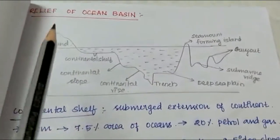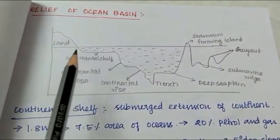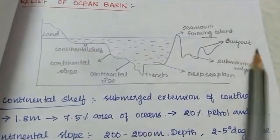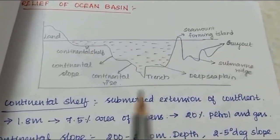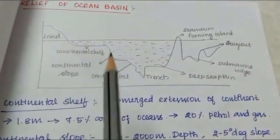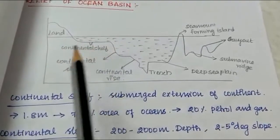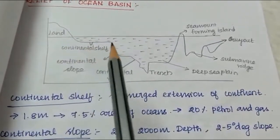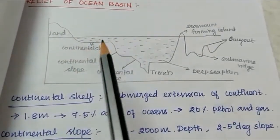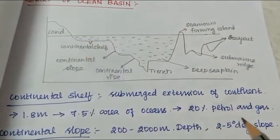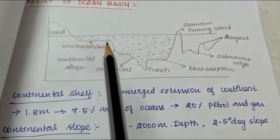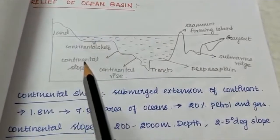The first part of the ocean is the continental shelf. What is continental shelf? It is the submerged extension of the continent. We have 1.8 million length of the ocean and 7.5% of continental shelf. We have 20% of petrol and gas in the continental shelf area, and then we have the continental slope.